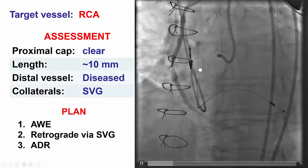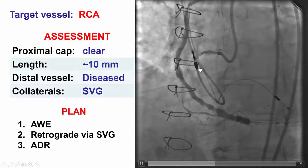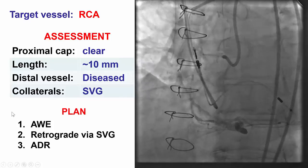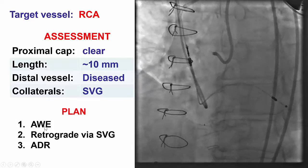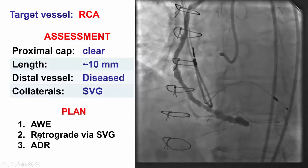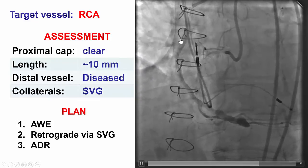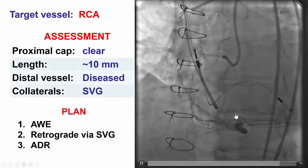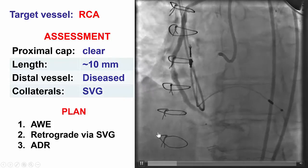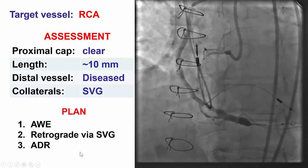Given the short occlusion length and the well-defined proximal cap, the initial plan was to perform antegrade wire escalation, followed by retrograde via the venous graft since it was such a large patent conduit, and as a third option, antegrade dissection and re-entry.